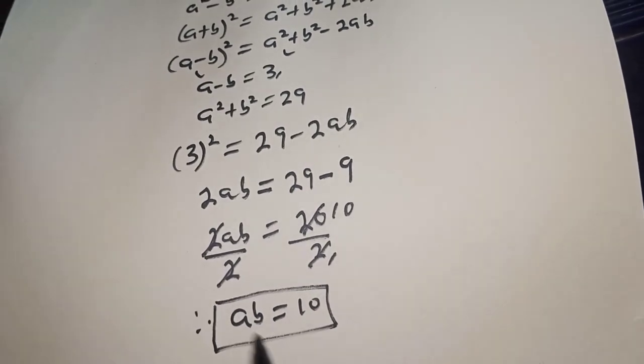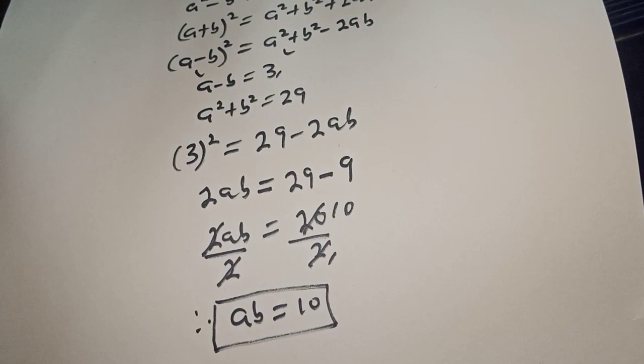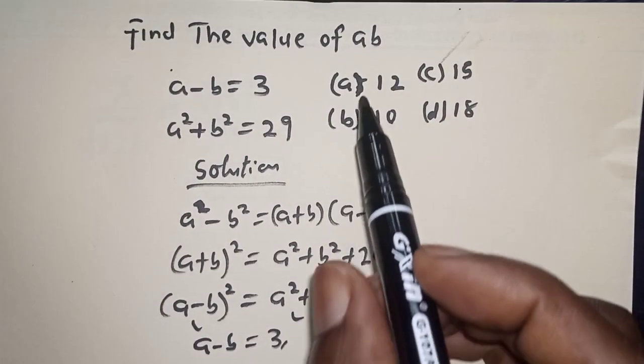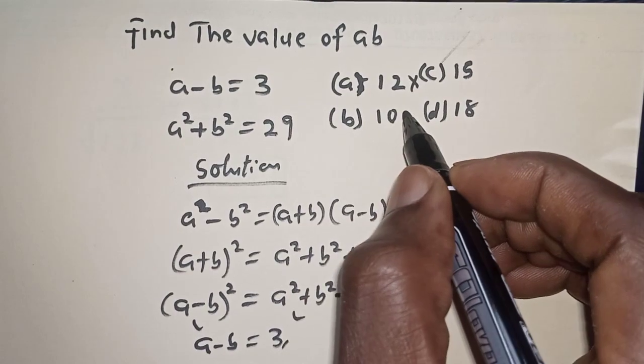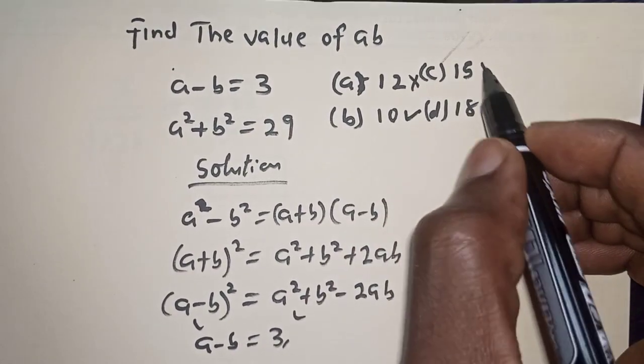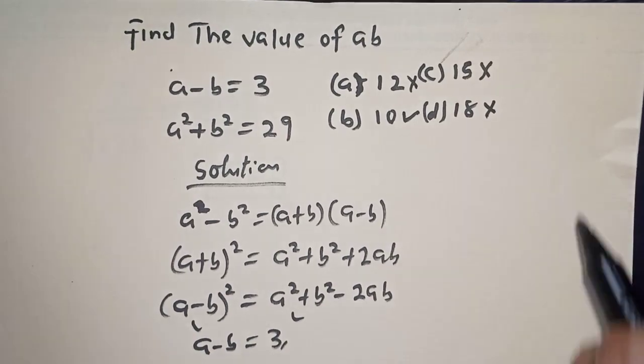This is the final answer. Let's check for the correct options. A is equal to 12? No. B is equal to 10? Yes. C is equal to 15? No. And D is equal to 18? No.